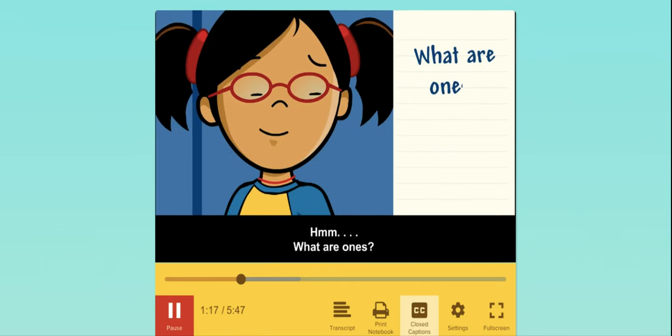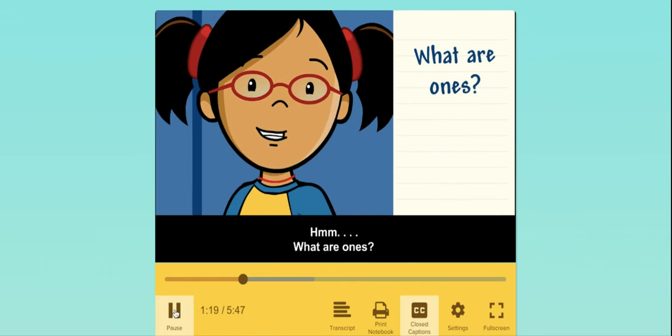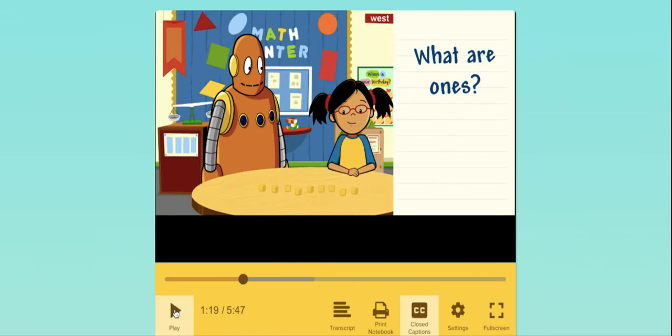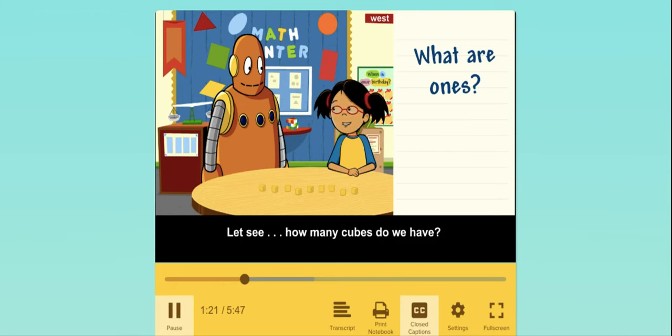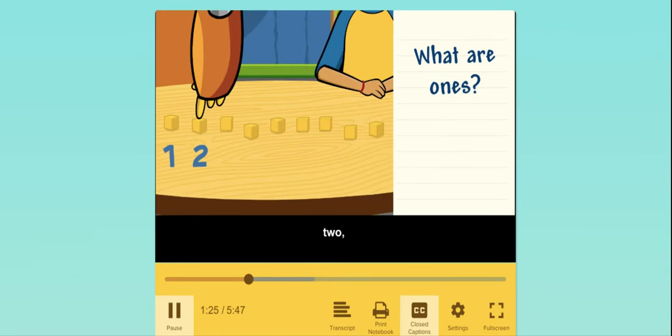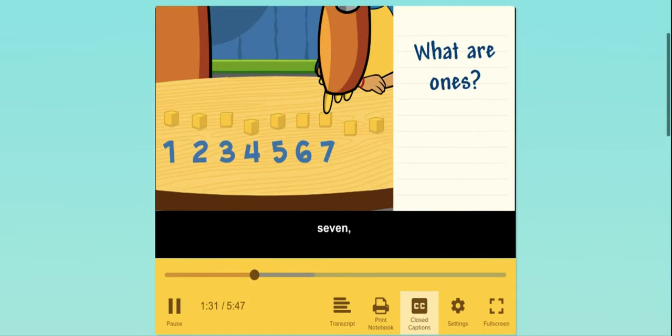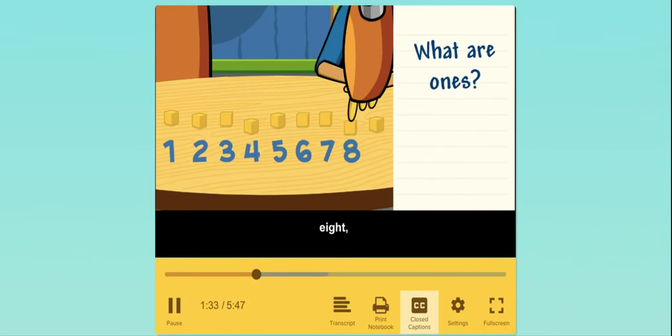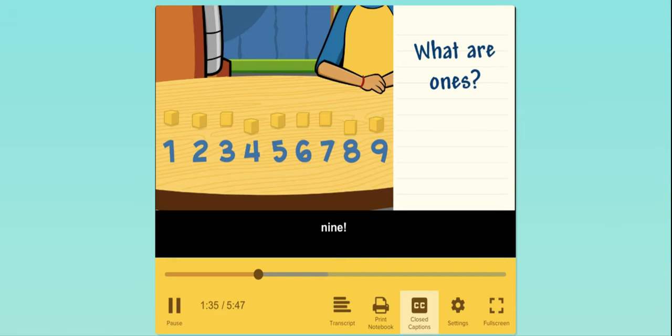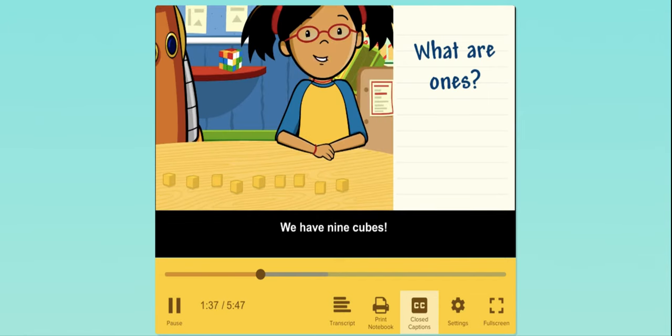What are ones? Let's see. How many cubes do we have? One, two, three, four, five, six, seven, eight, nine. We have nine cubes.